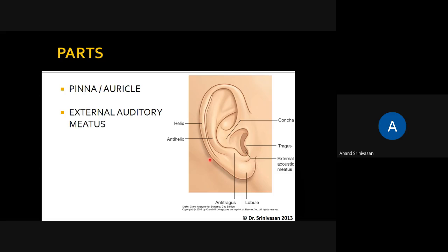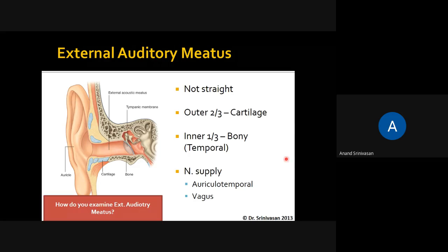The external ear is the one which we are able to see outside, and this is called the pinna or auricle. In the center of the pinna there is a small opening called the external acoustic meatus — that is the hole through which we are able to hear.